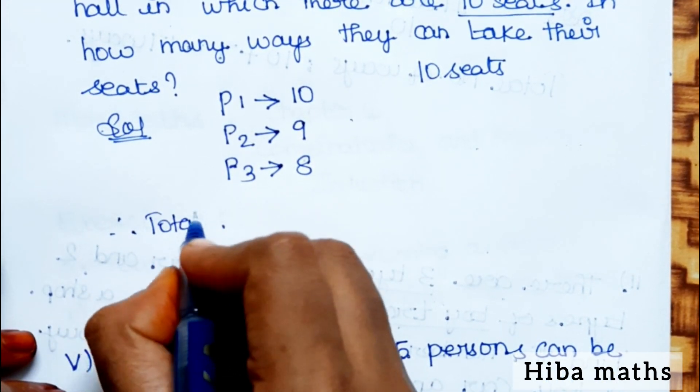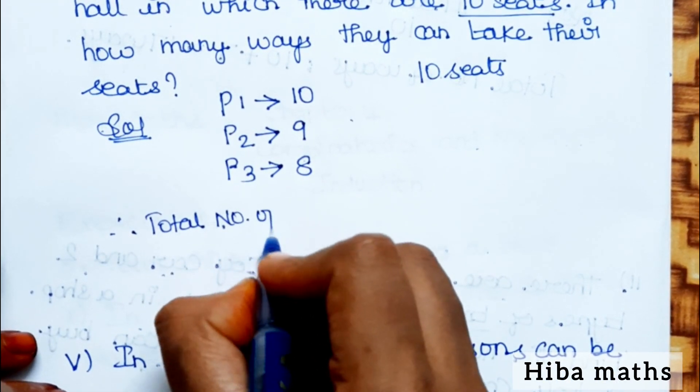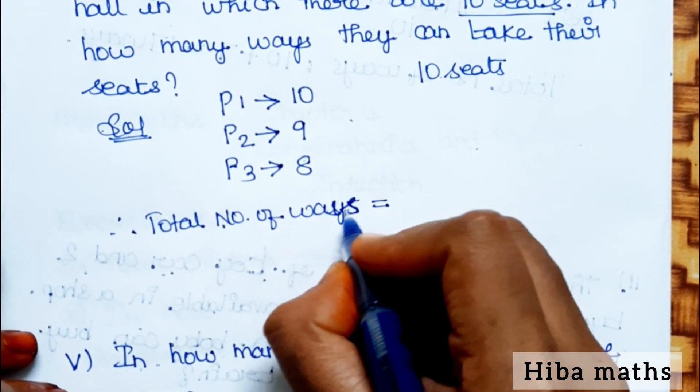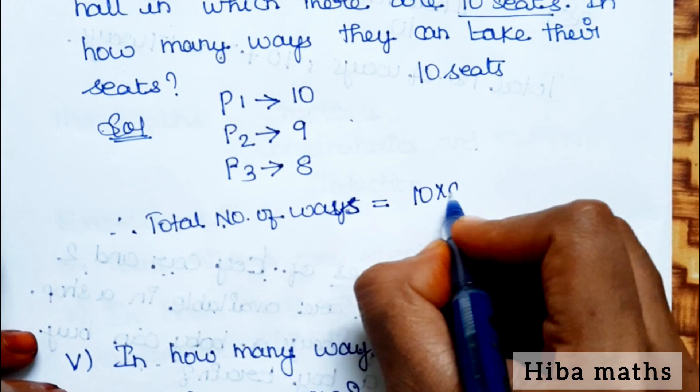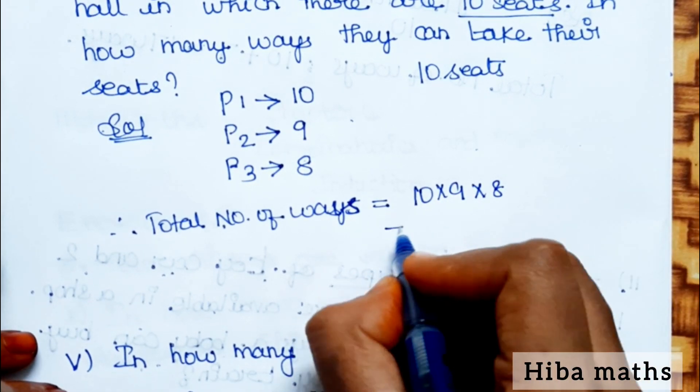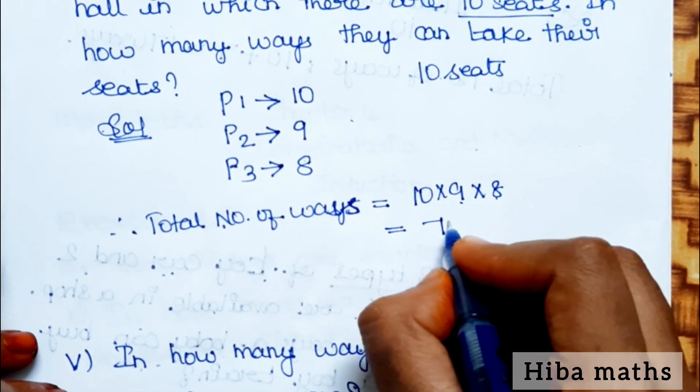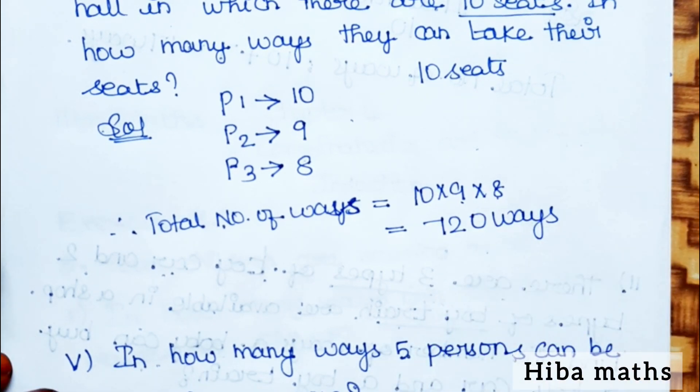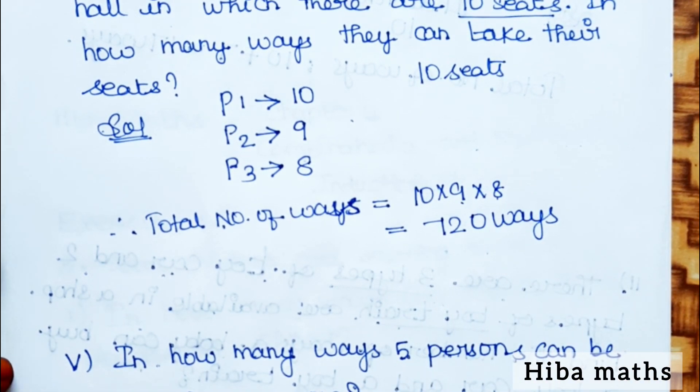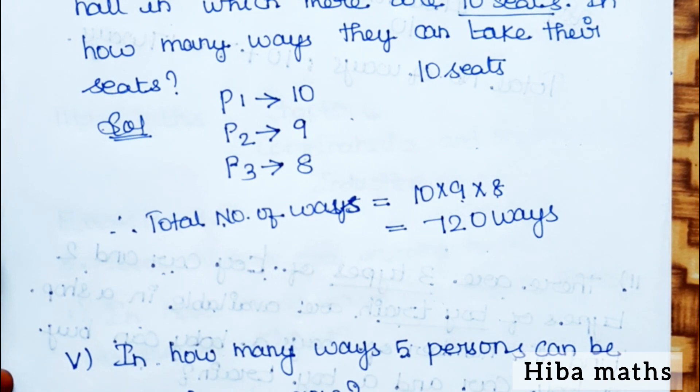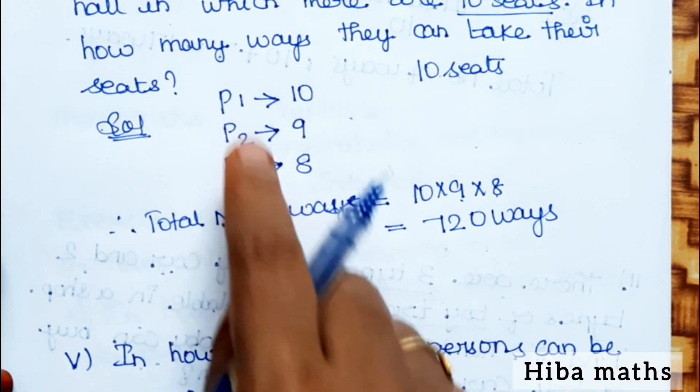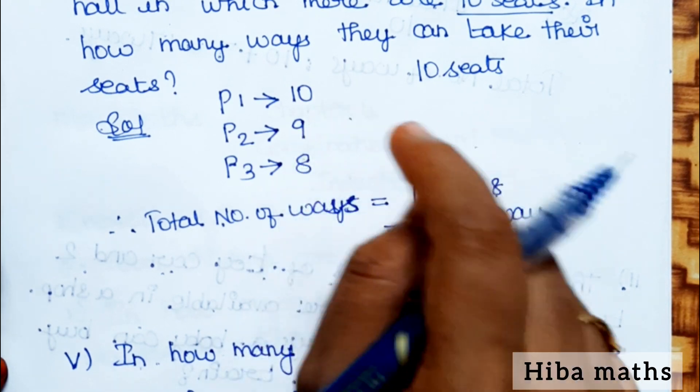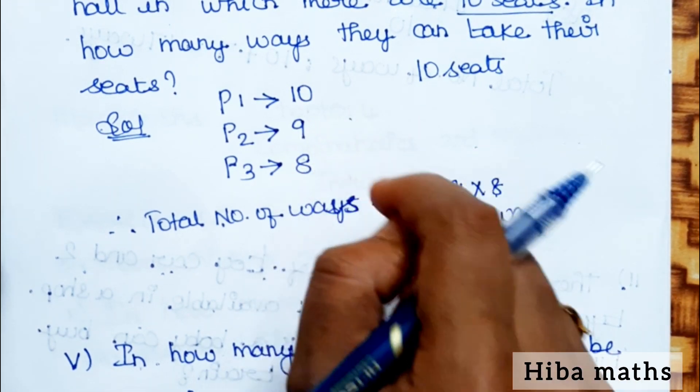Therefore, total number of ways is equal to 10 into 9 into 8. 9 times 8 is 72, 72 into 10 is 720 ways. That is very easy. When the first person takes a seat, the balance seats are available for the next person.